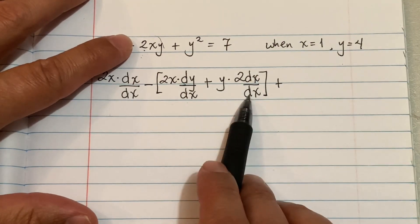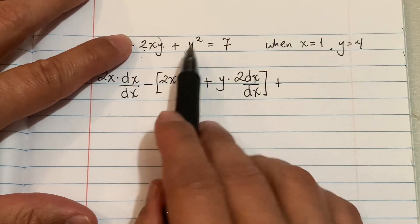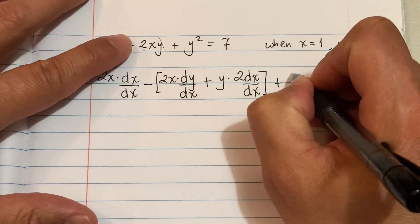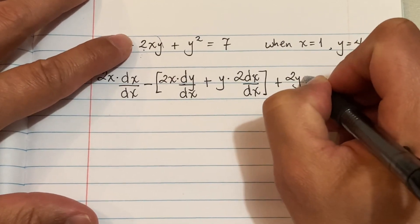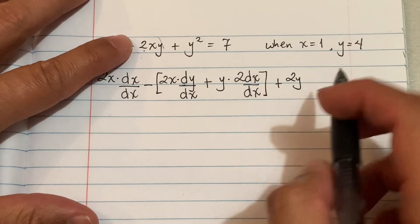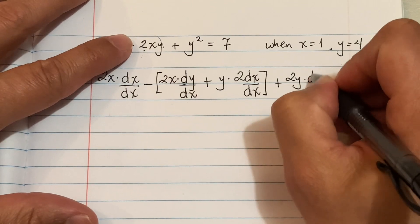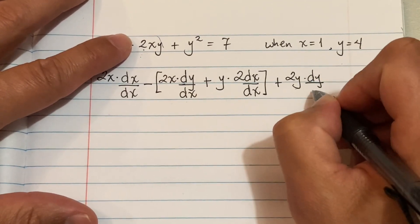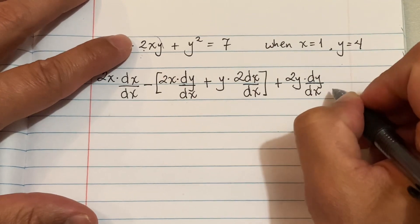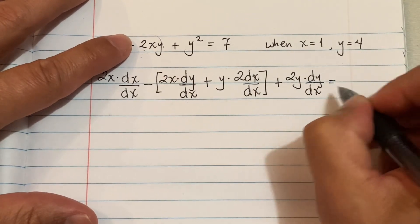And then this guy here—the derivative of Y squared is 2Y, but because it's with Y we're gonna do DY, the derivative of this letter with respect to X, dy/dx equals...